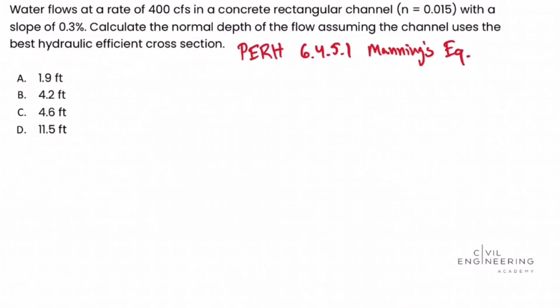Manning's equation given is Q equals 1.486 over n A times R subscript h to the 2 thirds times S raised to the 1 half. So let's look at this and plug in what we have. We'll call this step one. There will be two steps in this problem.